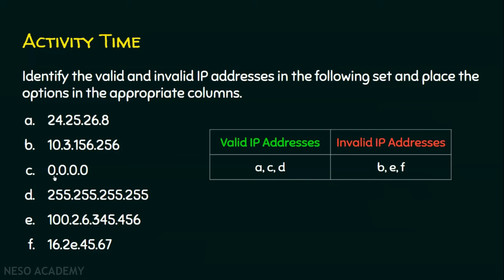Coming to C, it is a valid IP address because each octet is between 0 and 255. D is also valid because D is the last IP address of the IPv4 address set and each octet is between 0 and 255.